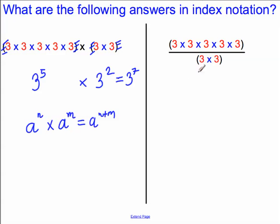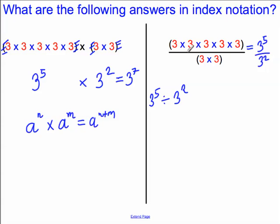Let's move over to the example on the right-hand side here. We have a fraction. We have 3 multiplied by 3 multiplied by 3 multiplied by 3 multiplied by 3 multiplied by 3, divided by 3 multiplied by 3. So we've got 3 to the power of 5 divided by 3 squared. Given that we've got 3's multiplying on the top and bottom, we can divide top and bottom by the 3's, and what we're left with is 3 multiplied by 3 multiplied by 3, which is 3 to the power of 3.